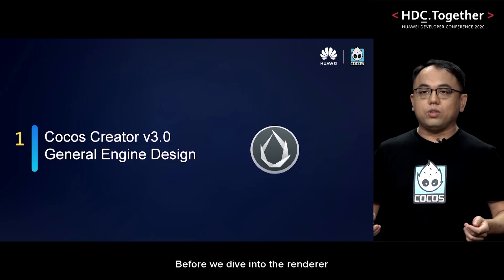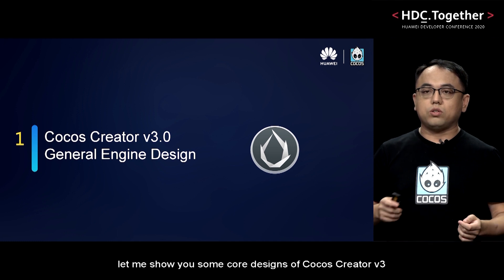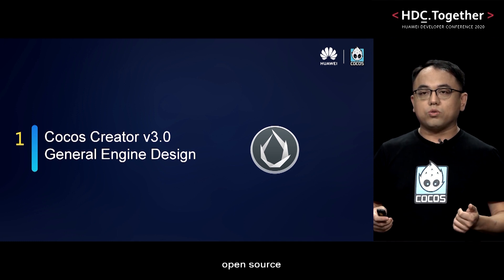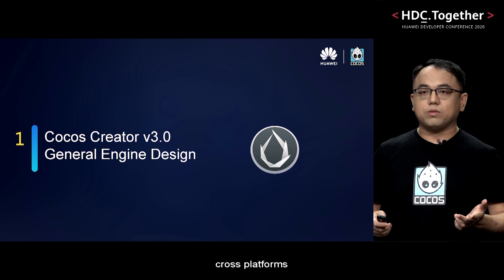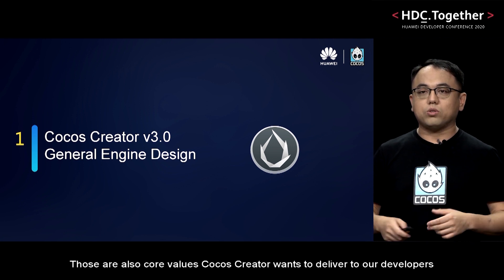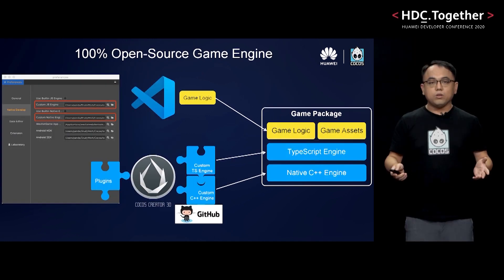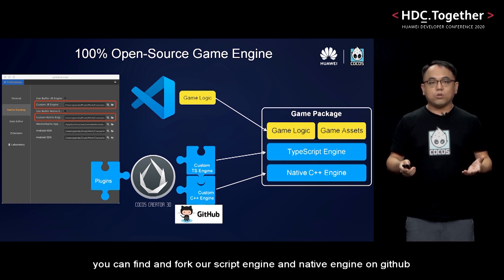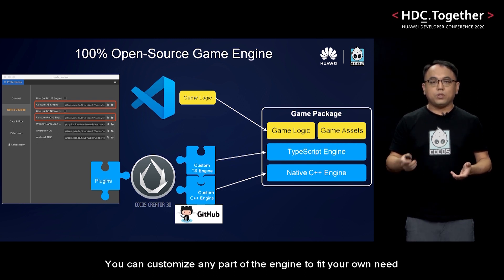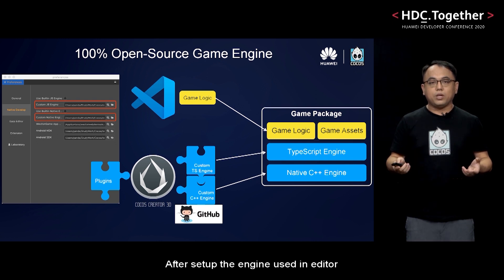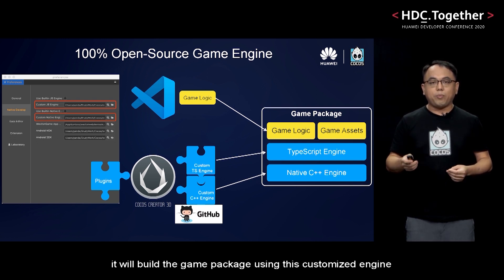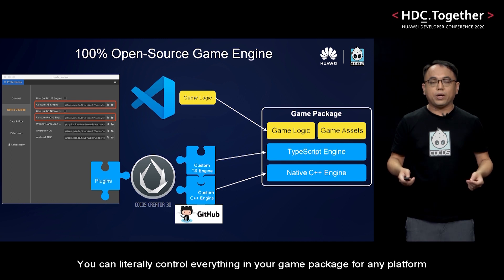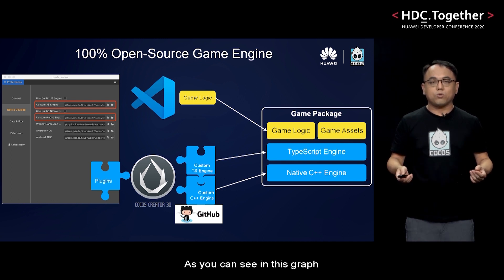Before we dive into the renderer, let me show you some core designs of COCOS Creator version 3: open-source, physically-based rendering, and cross-platforms. Those are also core values COCOS Creator wants to deliver to our developers. First of all, COCOS Creator is a 100% open-source game engine. You can find and fork our script engine and native engine on GitHub. You can customize any part of the engine to fit your own needs. After setting up the engine used in the editor, it will build a game package using this customized engine. You can literally control everything in your game package for any platform.